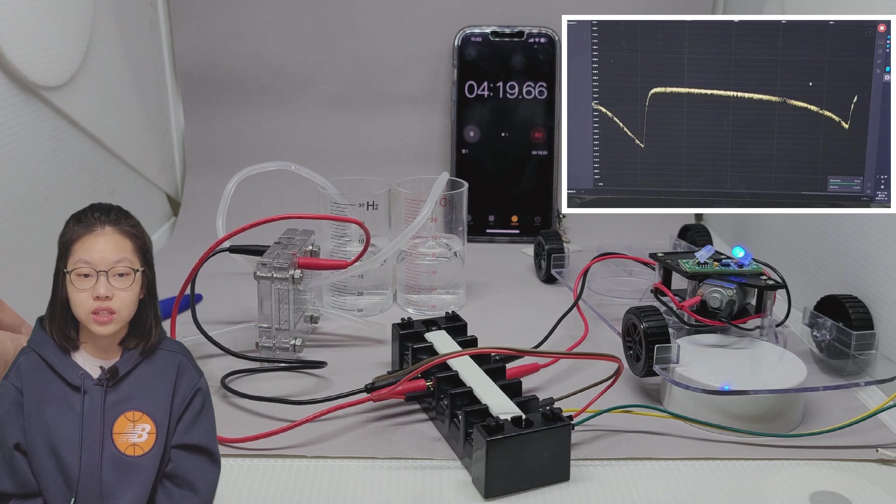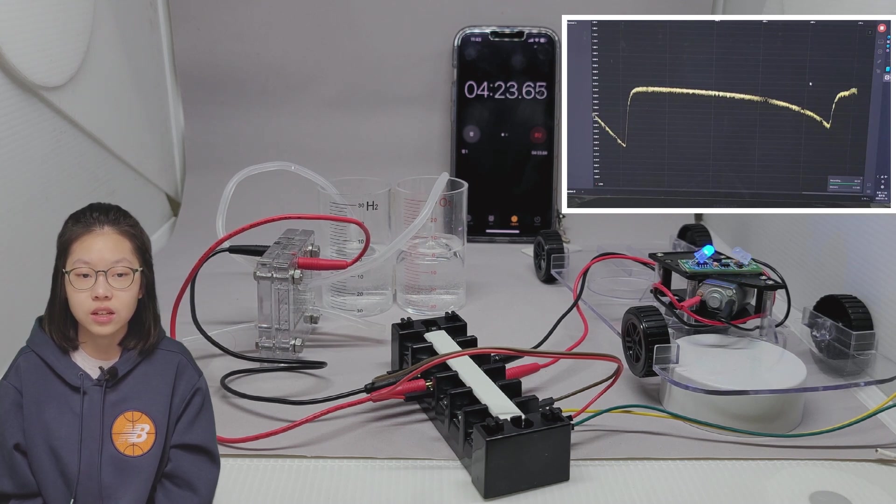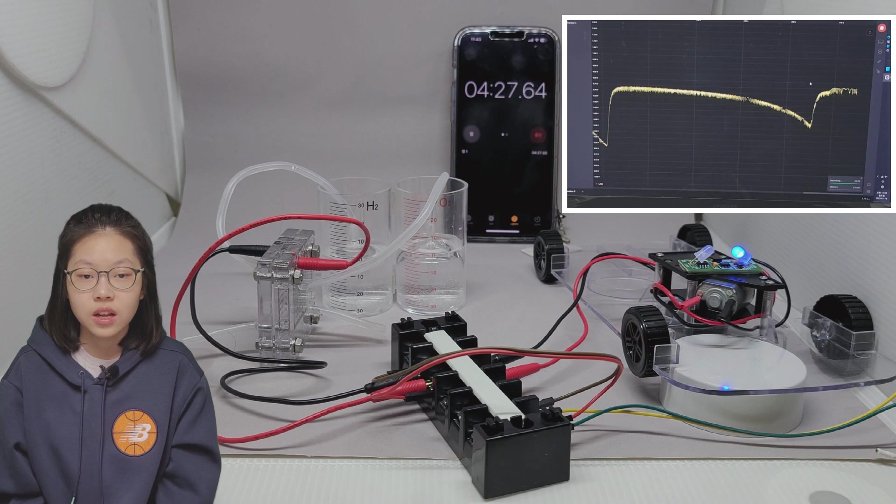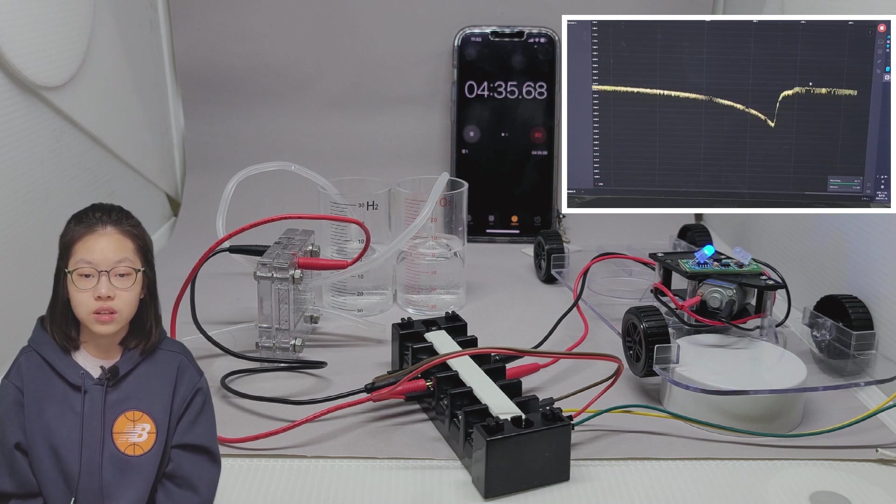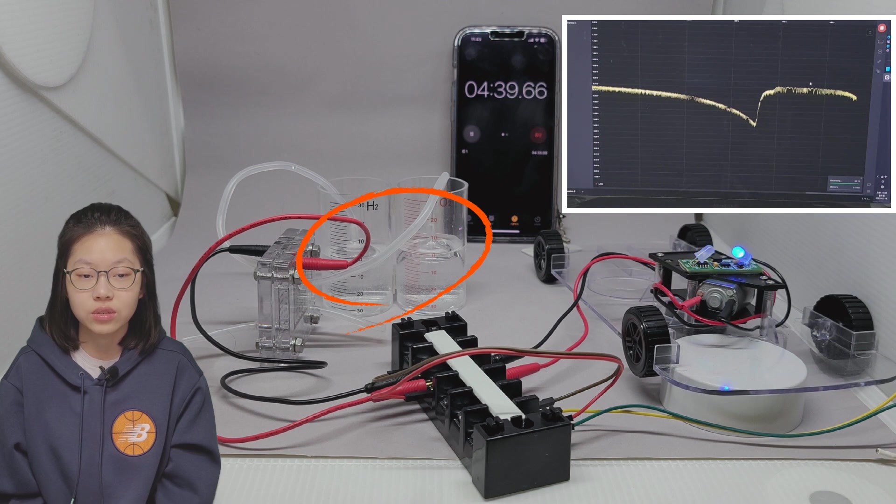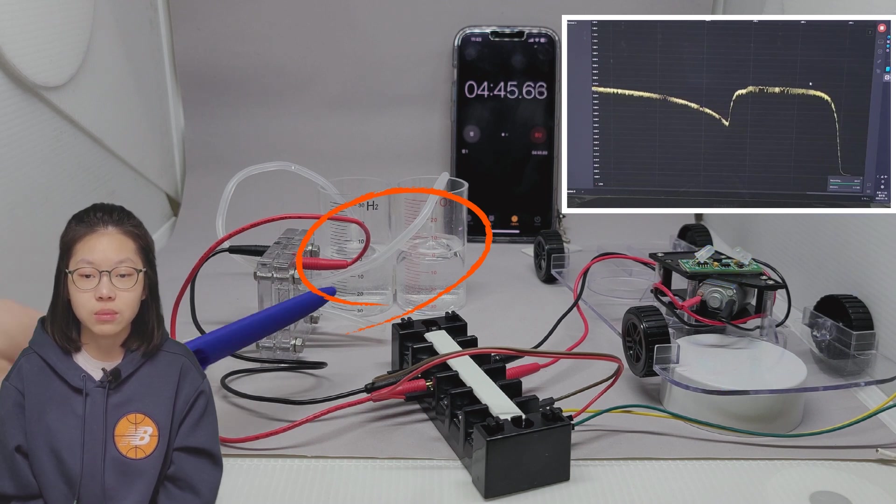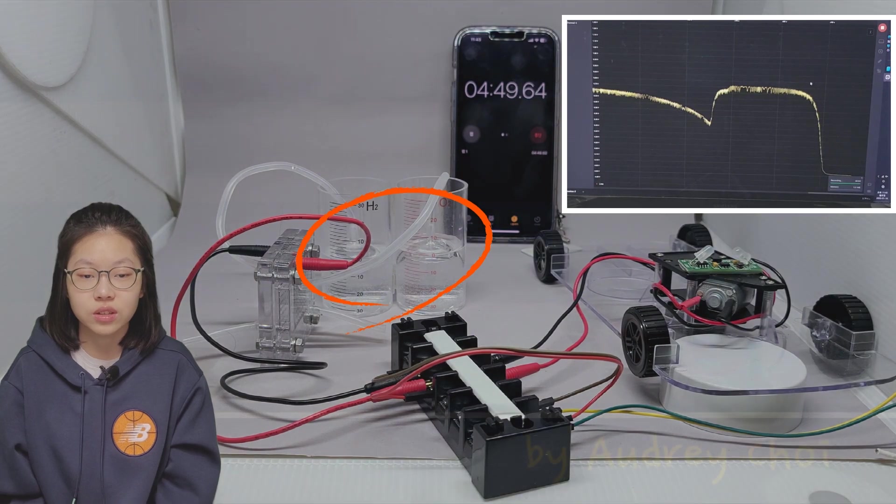During this process, the hydrogen and oxygen in the tanks continue to decrease. About 5 minutes after starting the experiment, hydrogen and oxygen were exhausted in the hydrogen and oxygen tanks. Nothing happens anymore when I flick the hydrogen outlet tube.